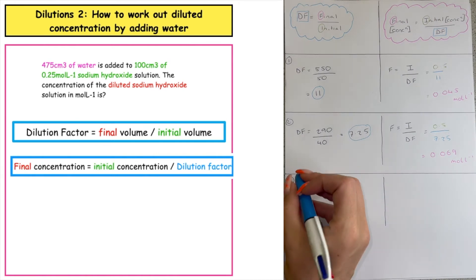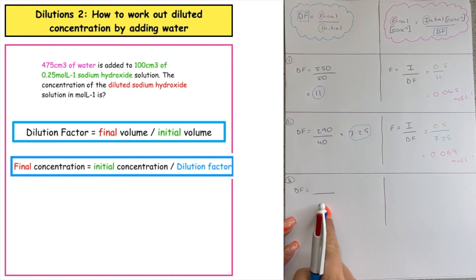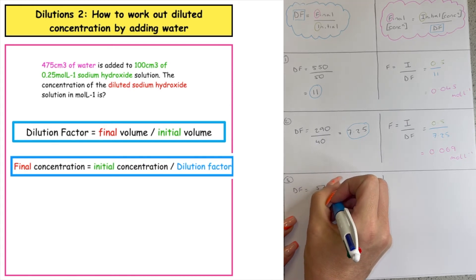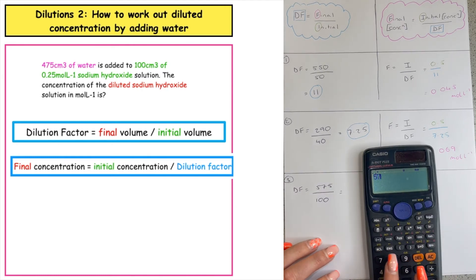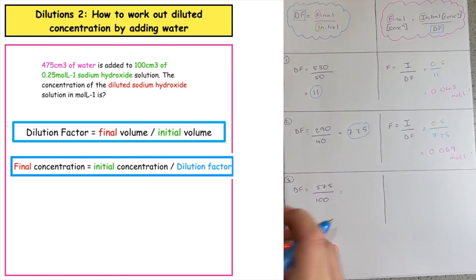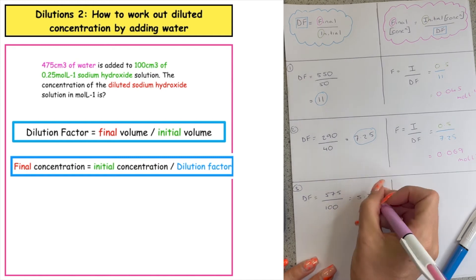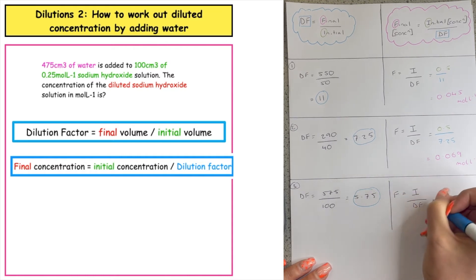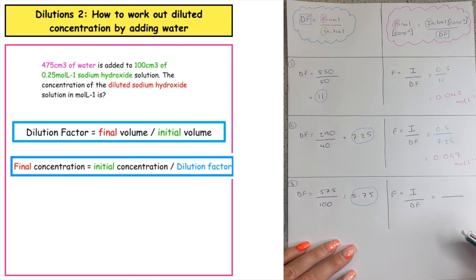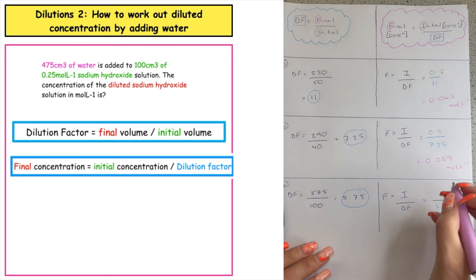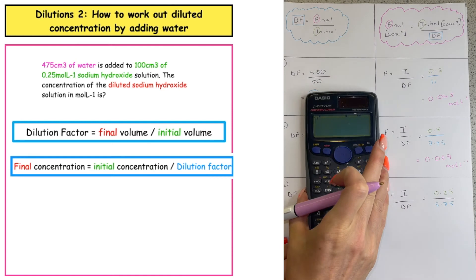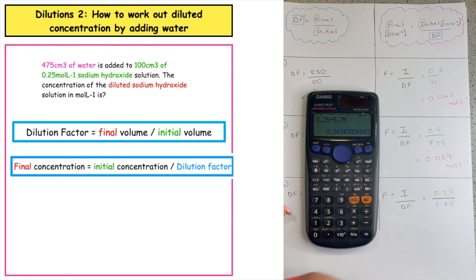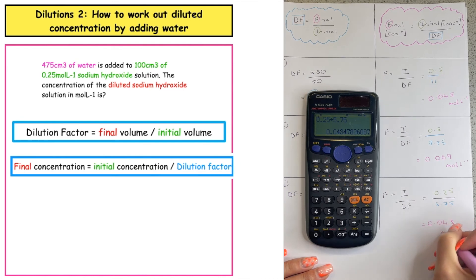Here's a third example to have a go at. The dilution factor is equal to the final volume over the initial — in this case the initial was 100 centimetres cubed. Adding the water to the initial gives a final volume of 575, so the dilution factor is 575 divided by 100, which equals 5.75. We then work out the final concentration: initial over dilution factor. The initial concentration was 0.25, so 0.25 divided by 5.75 gives a final concentration of 0.043 moles per litre.